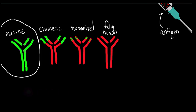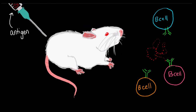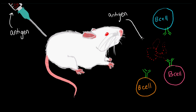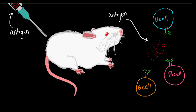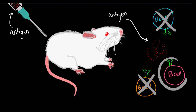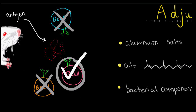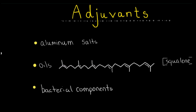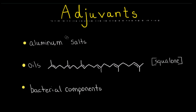First, we need to immunize an animal model such as a mouse or a rabbit with a specific antigen, which can be a single protein or a carbohydrate. The mouse or rabbit is likely to have naive B cells that recognize the injected molecule due to somatic recombination and junctional diversity. One thing to mention is that these antigens are usually attached to adjuvants, so as to boost immunogenicity of the antigen.